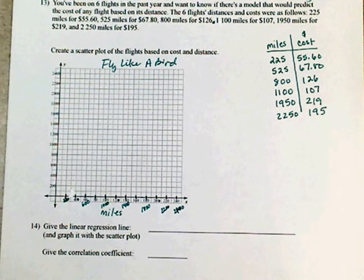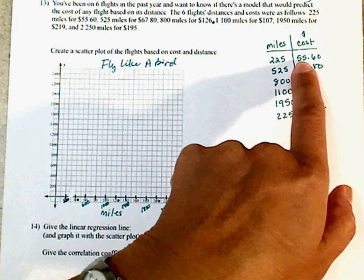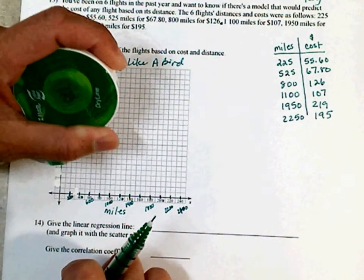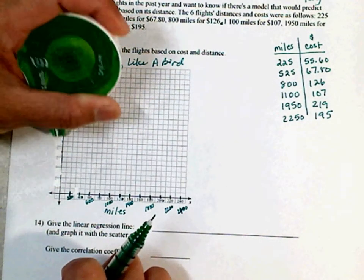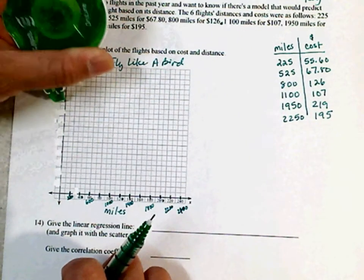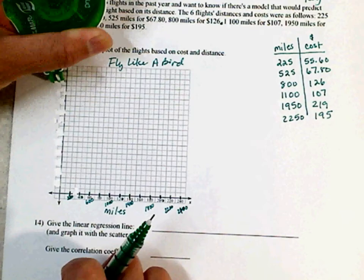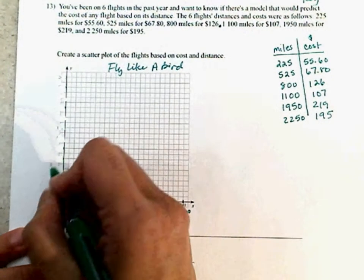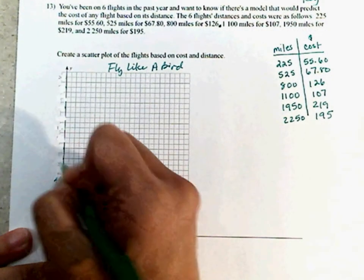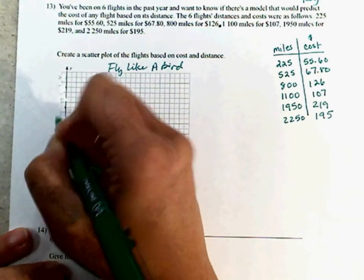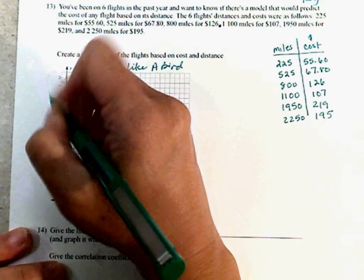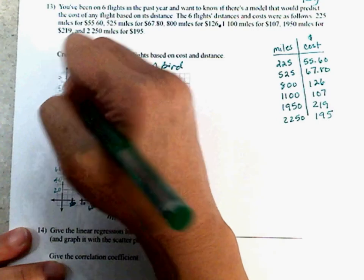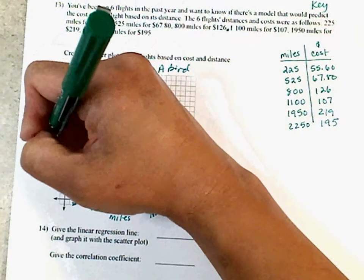Next part. Now, my lowest value is $55.60, and my highest is 200. So maybe I want to change these numbers. Let's go ahead and start this one at 20, 40, 60, 80, 100, 120, 140, 160, 180, 200, 220. I think we're good. And this will be our cost in dollars.